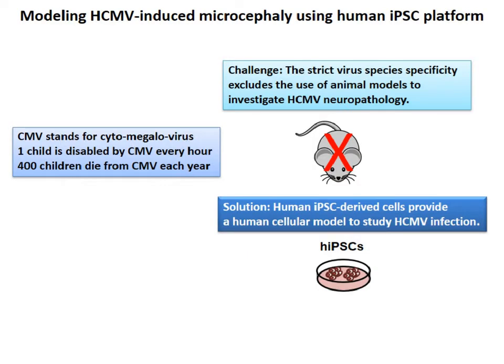In addition to modeling human disease using 2D culture, next I'm going to share with you a study we did to model human disease using a 3D human iPSC-derived platform — in this case, brain organoids. Human CMV stands for human cytomegalovirus. One child is disabled by CMV every hour, and 400 children die from CMV each year. The challenge to understand how human CMV causes neuropathology is that there is strict virus species specificity, which excludes the use of animal models to investigate human CMV neuropathology.